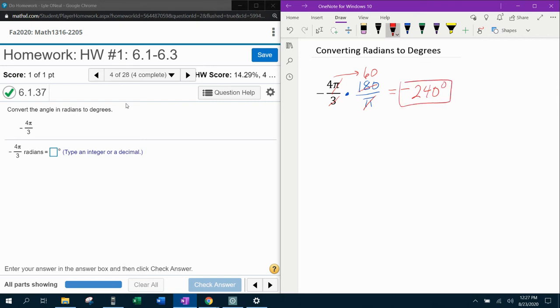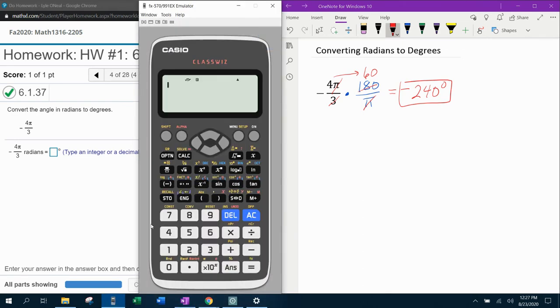And if we want to, we can check that with the calculator. Now watch this. I can say negative fraction four pi over three multiplied by 180 over pi.